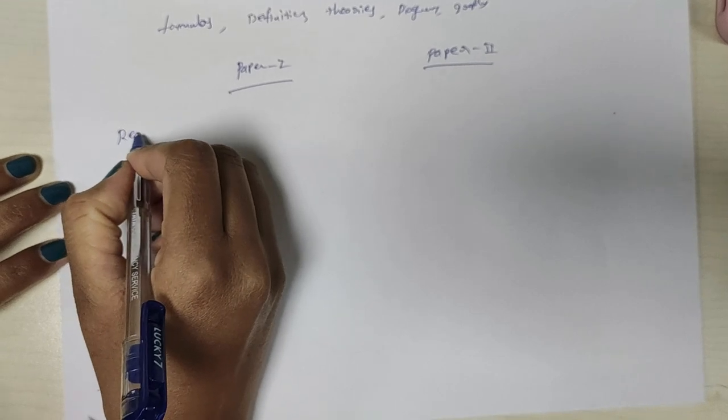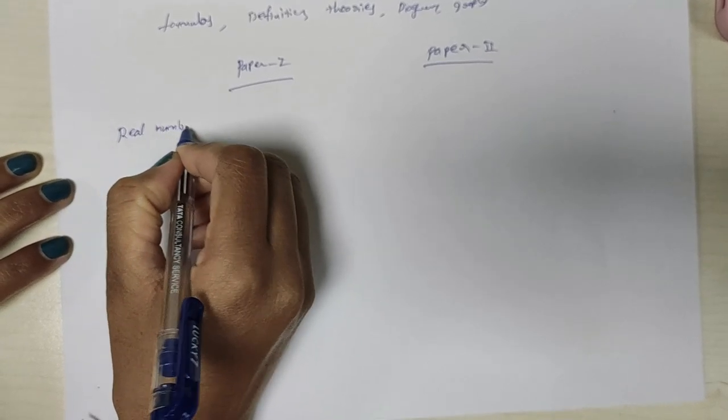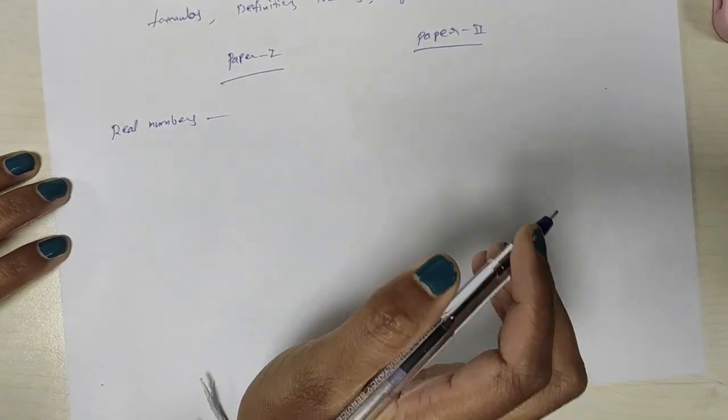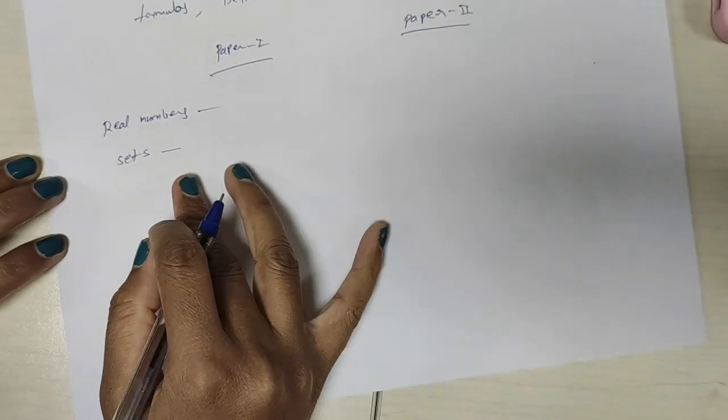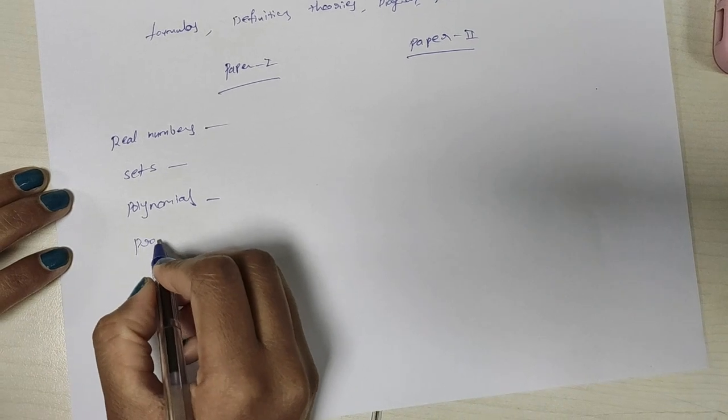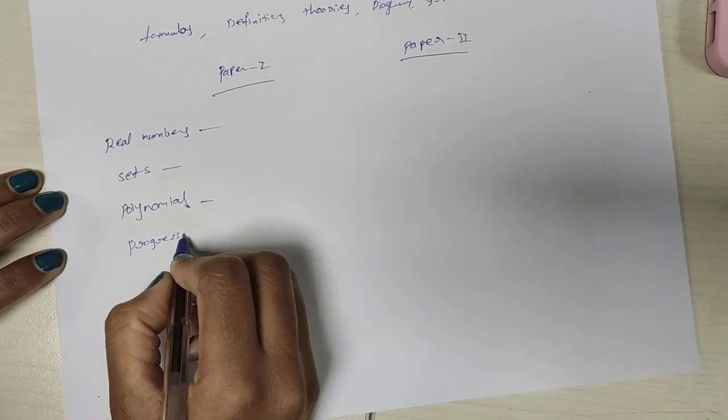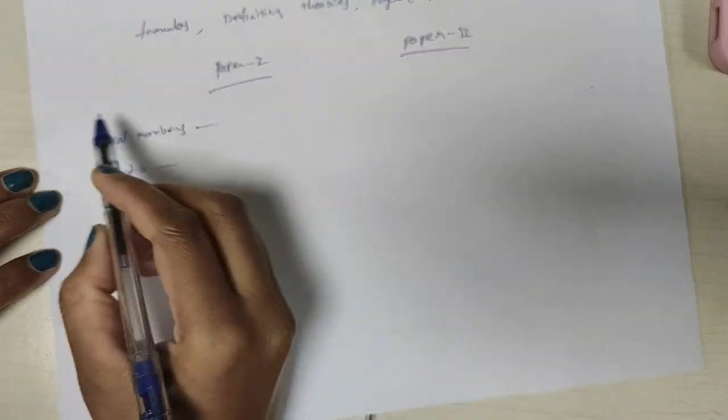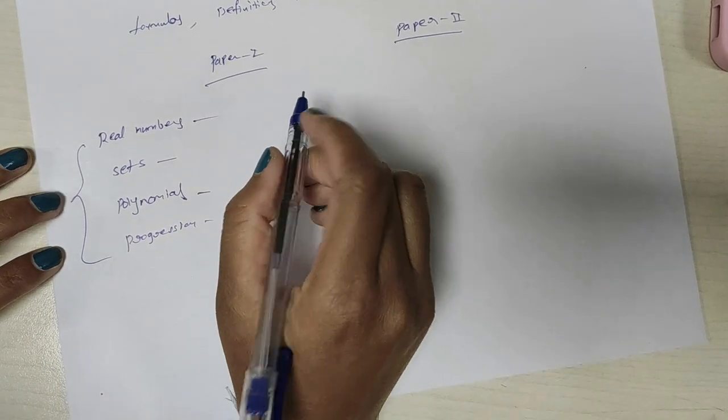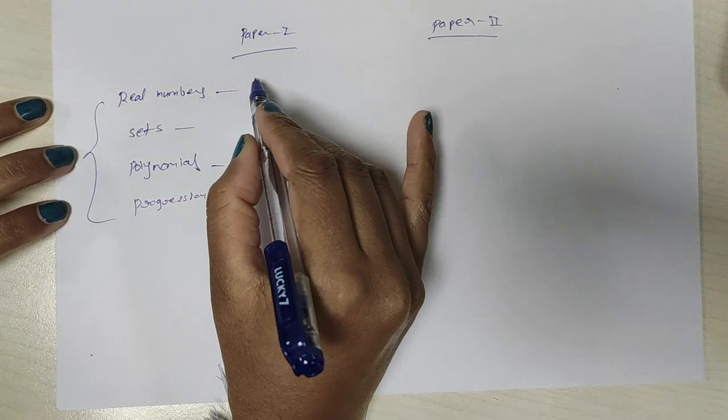Real Numbers. Next, Sets. This is important. Next, Polynomials. Next, Progression. In this paper, we will choose Real Numbers.